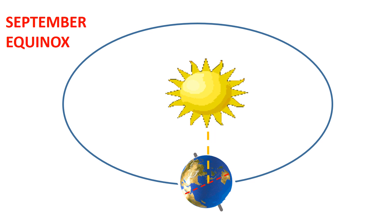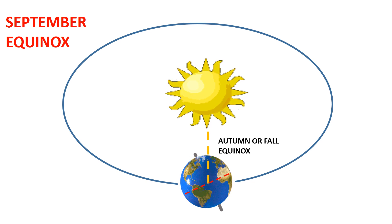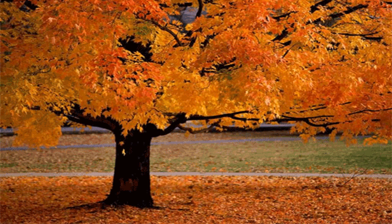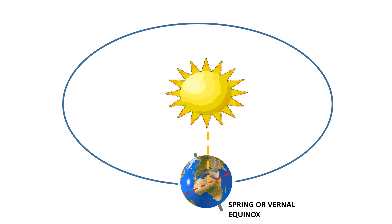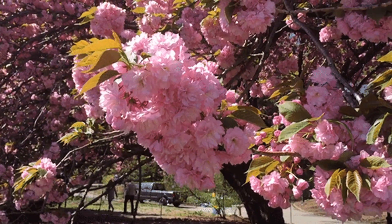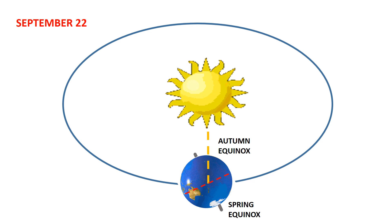The September equinox is also known as the autumnal or fall equinox in the northern hemisphere and is considered the first day of fall. In the southern hemisphere it is known as the vernal or spring equinox and marks the first day of spring. This happens on September 22nd every year.